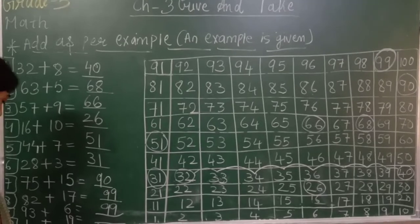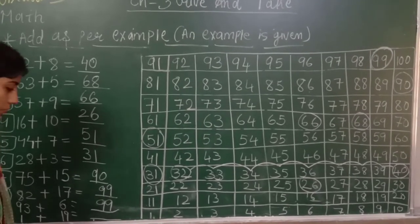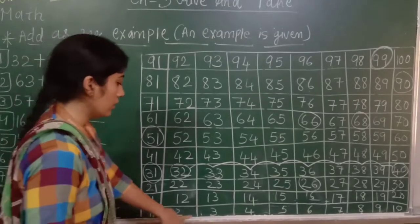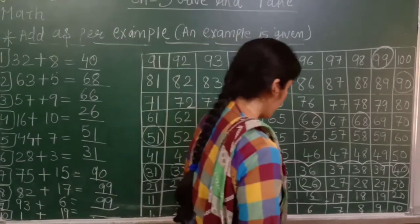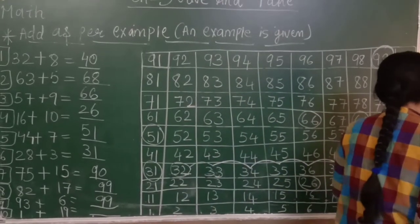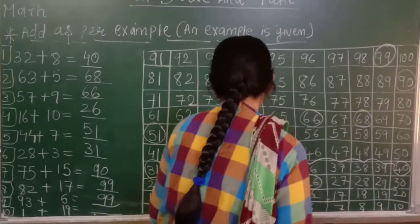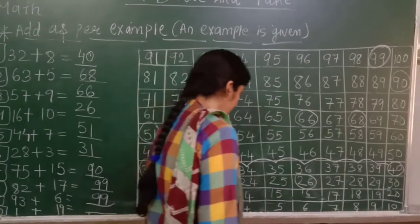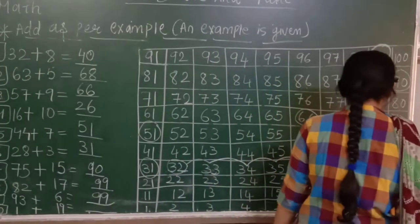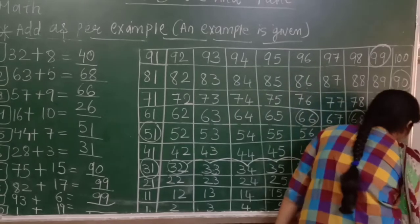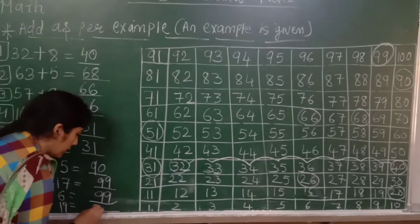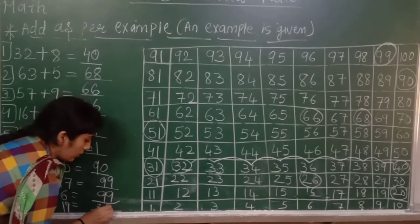Next, tenth and last number: 1 plus 19. Humko 1 pe khaade hoke 19 steps jump karna hai. Counting 1 through 19. Answer kya hai? 20. So 1 plus 19 is equal to 20.